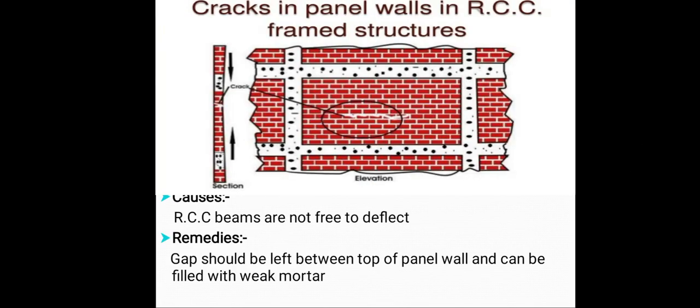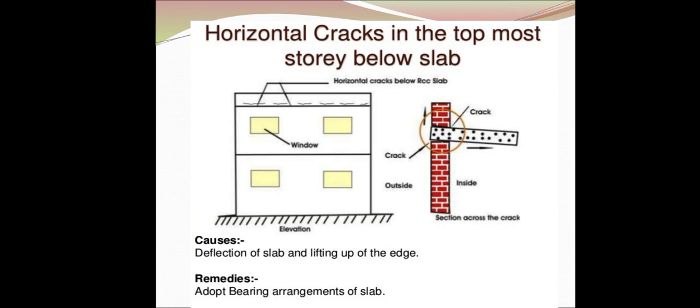Cracks in panel walls in RCC frame structures: the cause is that RCC beams are not free to deflect. The remedy is that gaps should be left between the top of the panel wall, which can be filled with weak mortar. Horizontal cracks in the topmost story below the slab are also noted.